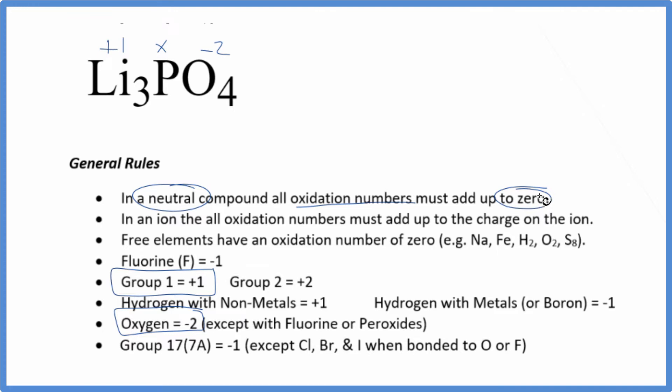Since this is neutral, all of this will add up to zero. Let's set up an equation: three times plus one equals three, plus X for phosphorus, plus four times minus two equals minus eight. All that equals zero.